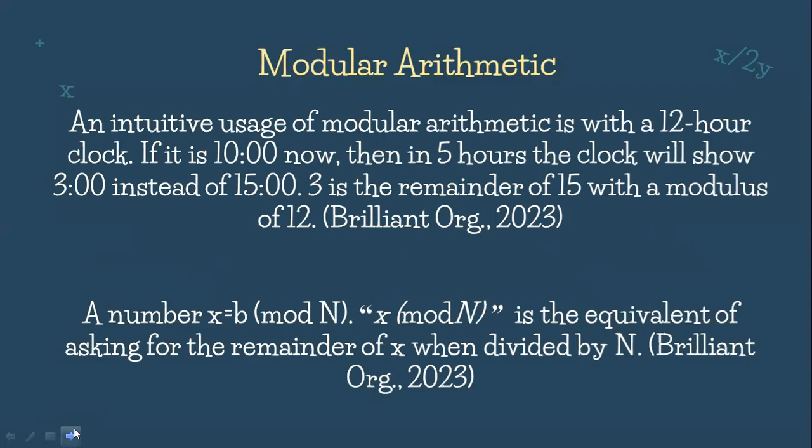Actually, our clock is an application of modular arithmetic. If it is 10 o'clock now, then in 5 hours, the clock will show 3 o'clock instead of 15 o'clock. 3 is the remainder of 15 with a modulus of 12. This is a direct application of mod 12 arithmetic, our clock.